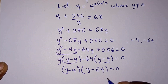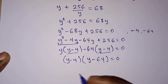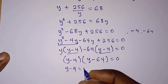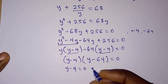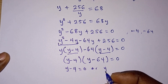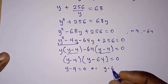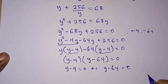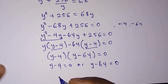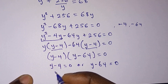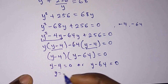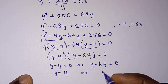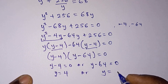Taking out the common factor (y minus 4) gives (y minus 4)(y minus 64) equals 0. So either y minus 4 equals 0, giving y equals 4, or y minus 64 equals 0, giving y equals 64.